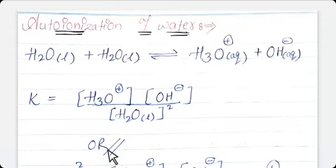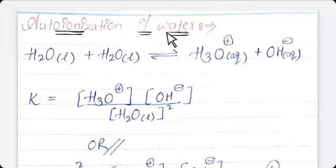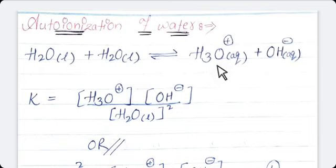Dear students, let's continue the chapter Ionic Equilibria. Today we are going to study auto ionization of water. Always remember, pure water ionizes to a very small extent. You can understand the ionization of pure water by this reaction: when you take water, it dissociates into H3O⁺, means hydronium ion, and OH⁻, means hydroxide.